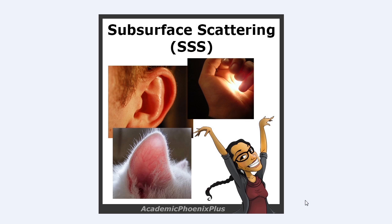We see subsurface scattering — also known as SSS — in everyday objects. What SSS is, is that the light actually comes into the material, bounces around, actually scatters, and then comes out in different directions. And we see this all the time in real-life examples.